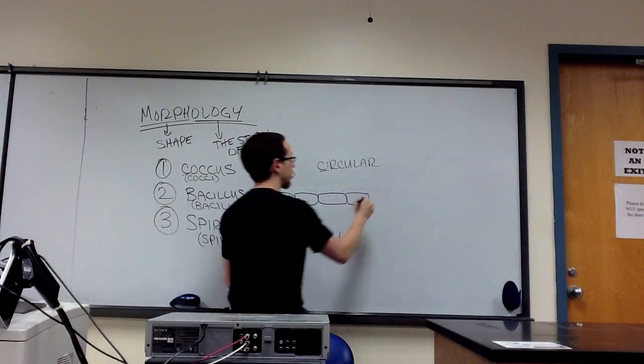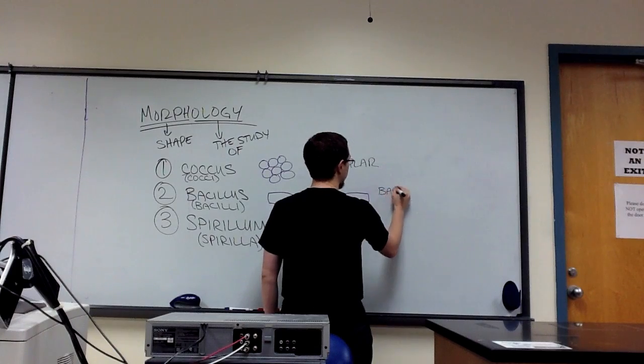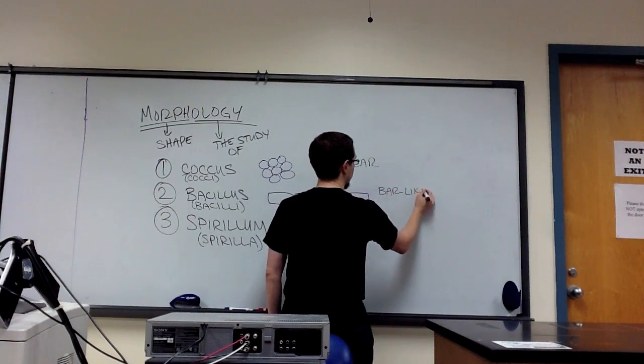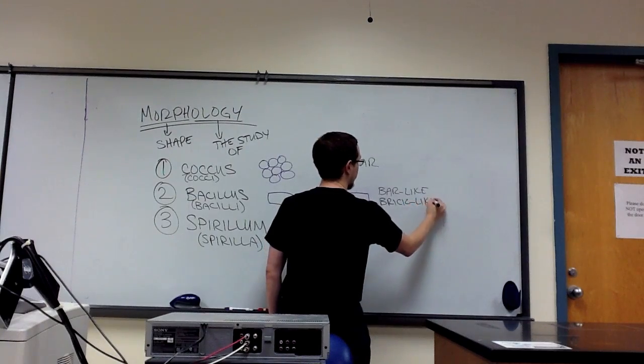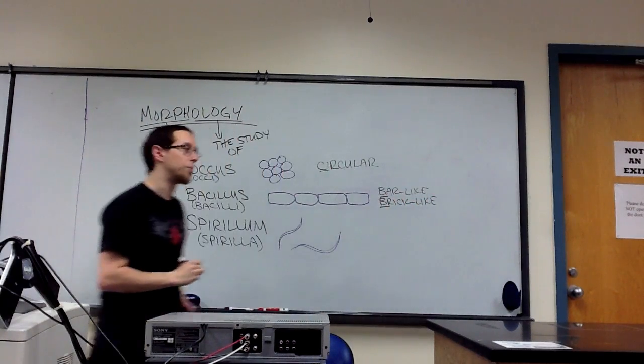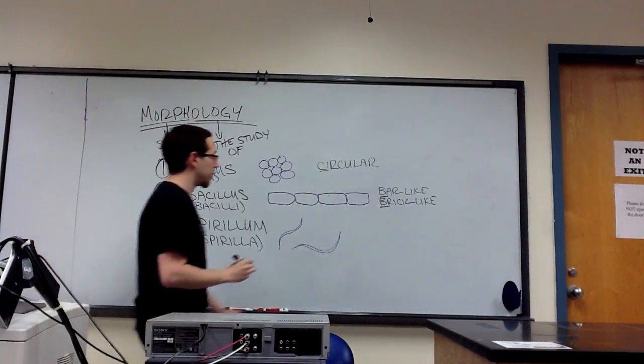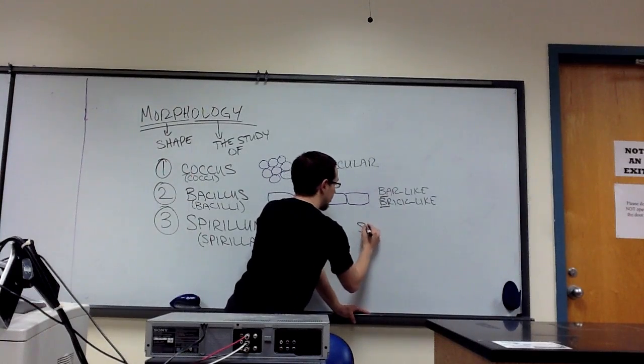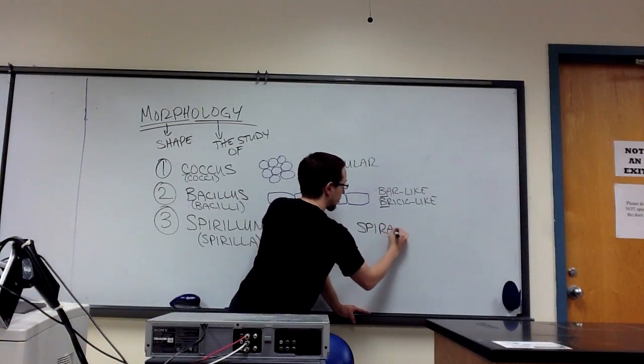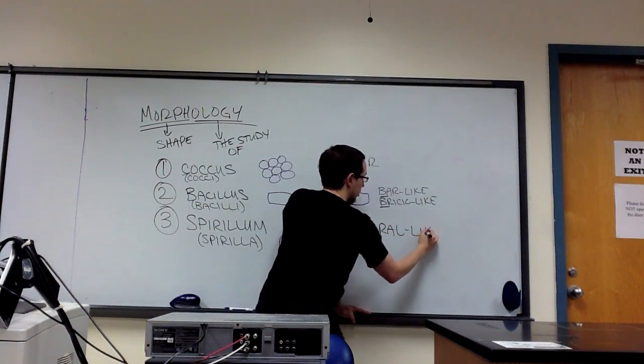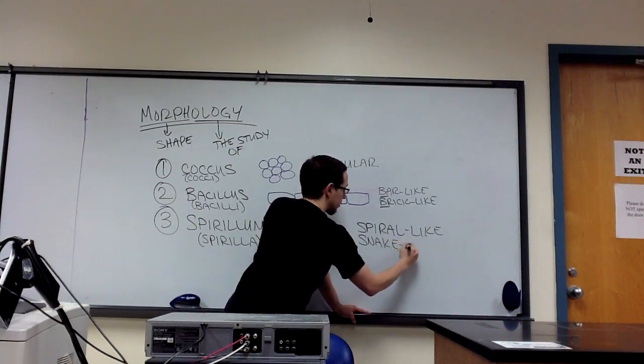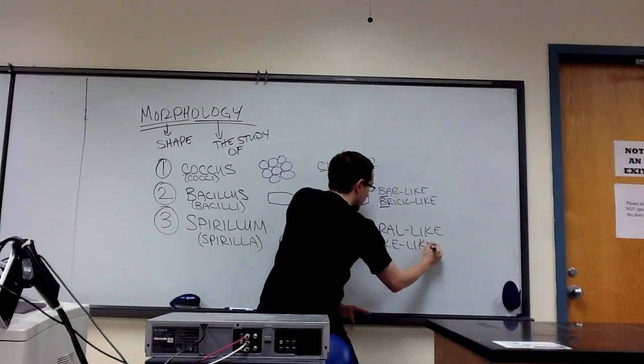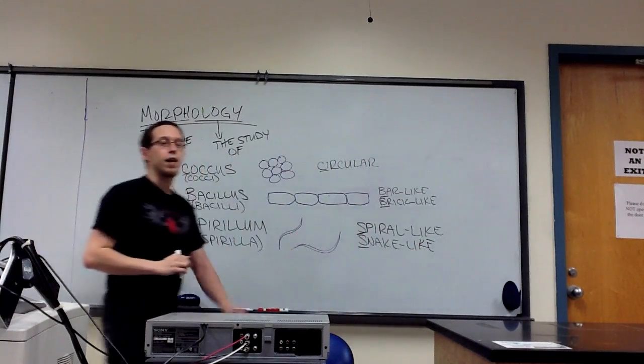Bacillus are either bar-like or brick-like. And either of these begins with a B. And spirilla, I have some students who tell me they look spiral-like. I think they look snake-like or string-like. But in any case, all of those begin with S.